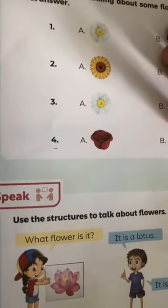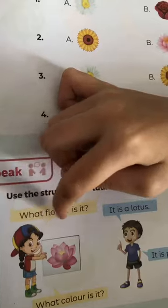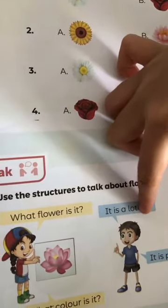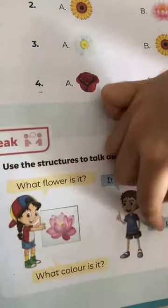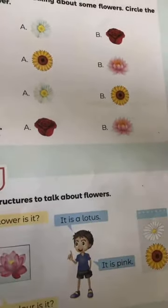What flower is there? What color is this? It's a lotus. What color is this? It's pink. N.